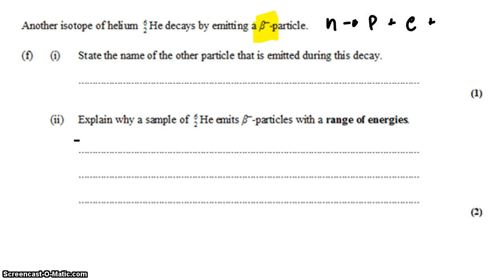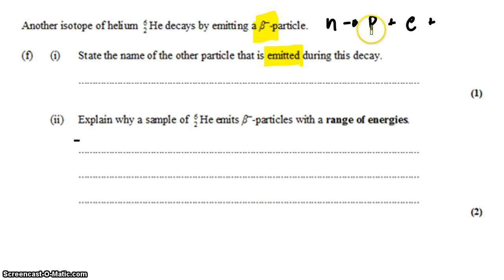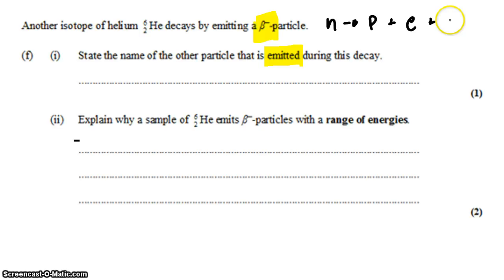The question asks for the other particle that's emitted during this decay, so it's not going to be the proton, because the proton doesn't get emitted — it stays in the nucleus that the neutron was in. The electron gets emitted, and so does this other thing called an anti-neutrino.